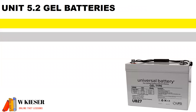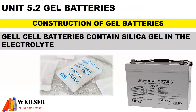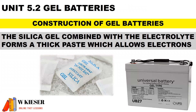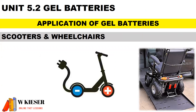In unit 5.2 for gel batteries, let's take a look at the construction. Gel cell batteries contain silica gel in the electrolyte. The silica gel combined with the electrolyte forms a thick paste, which allows electrons to flow. Gel batteries are used in scooters, wheelchairs, and high-end vehicles.